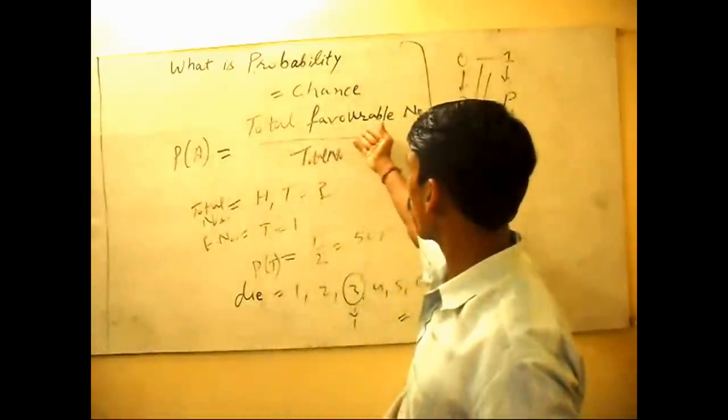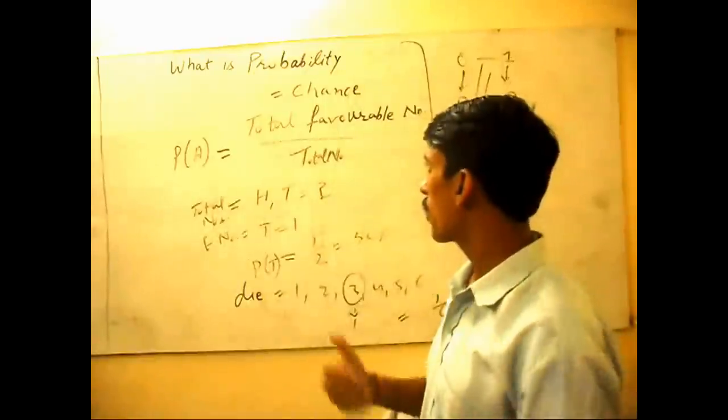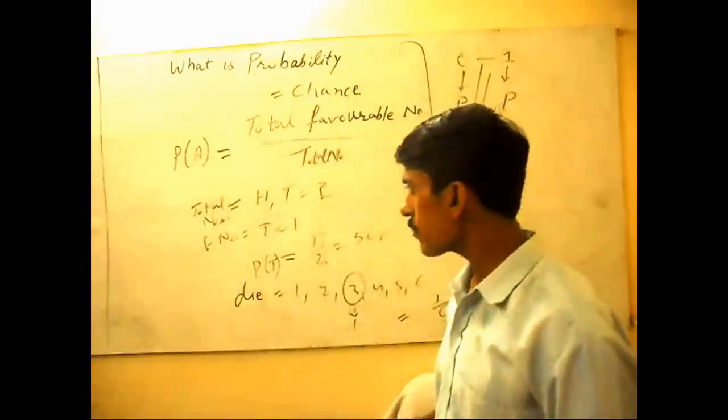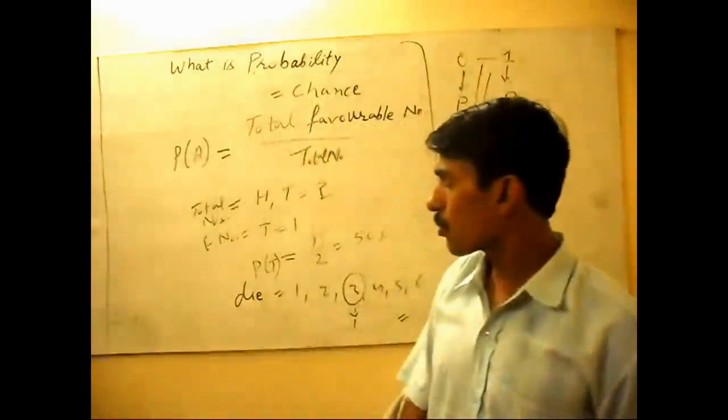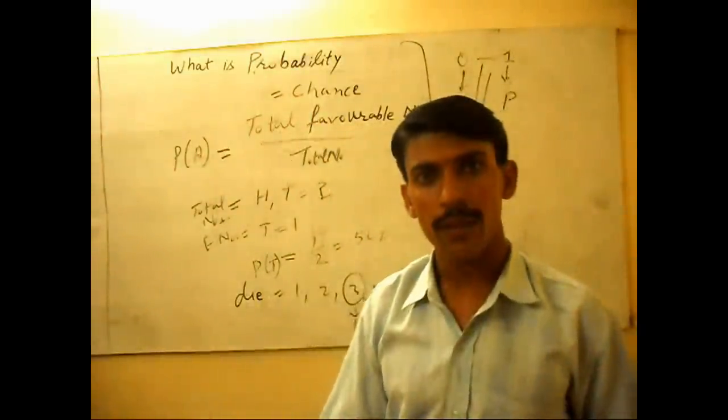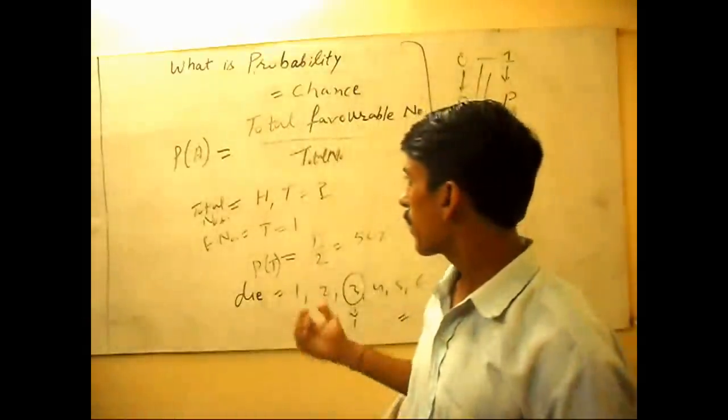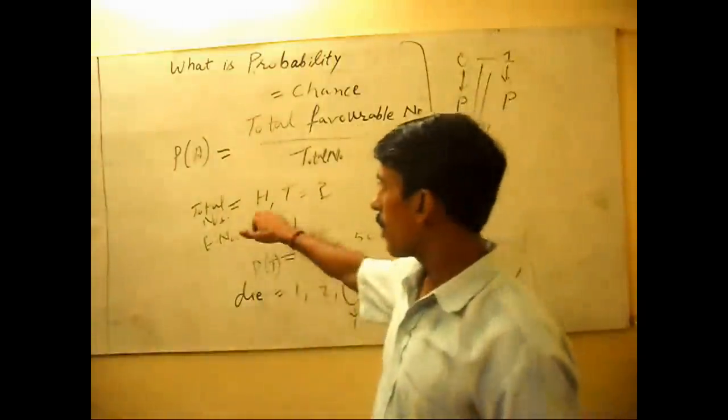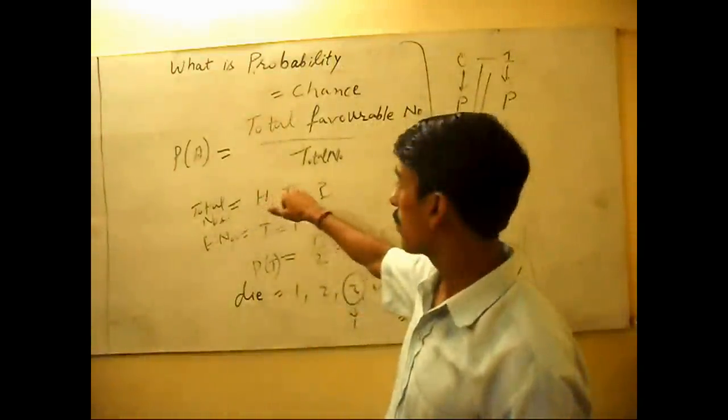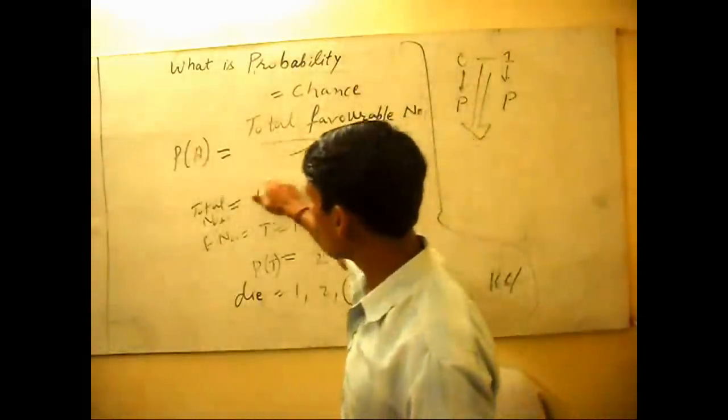of total number of favorable cases divided by total number of cases. Suppose we toss a coin and we get two chances - either head will come or tail will come. It means total number of happenings is two.